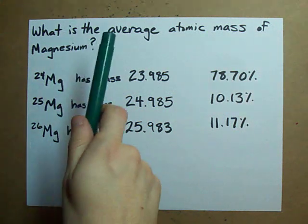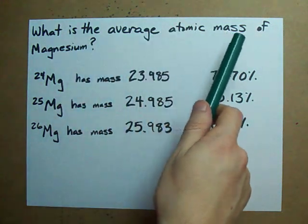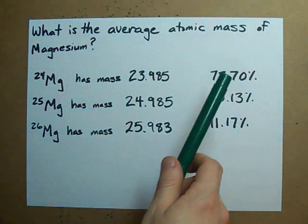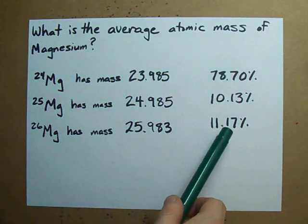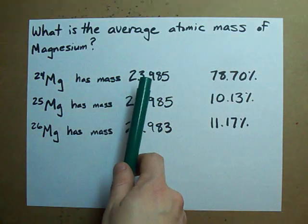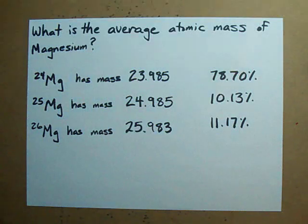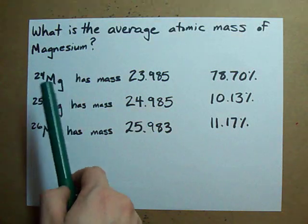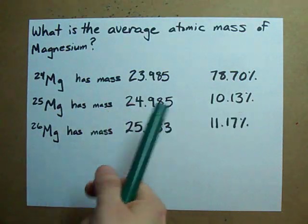How do you calculate the average atomic mass of an atom if you're given the isotopic abundances and the mass of each of the isotopes? For example, magnesium exists in three different isotopes.